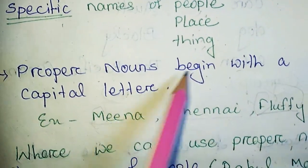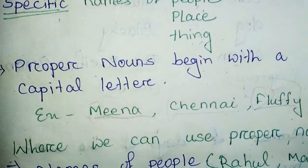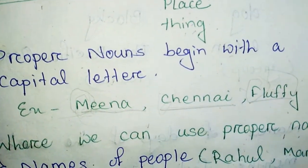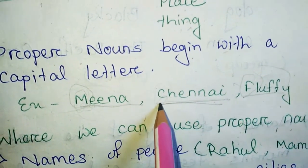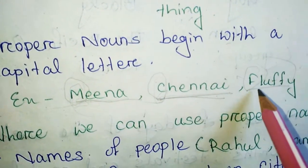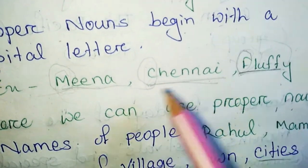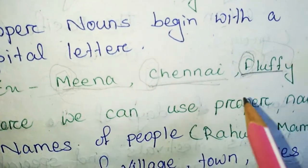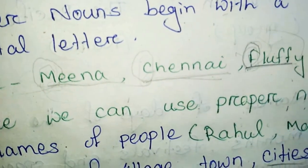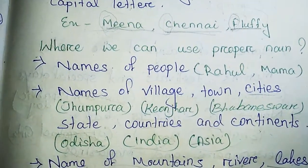And proper nouns begin with a capital letter. Here, Mina is an example of proper noun, and it begins with the capital letter M. Here, Chennai is a name and it's a proper noun — the first letter C begins with a capital letter. Here, Fluffy is a pet name, and that name begins with F, which is a capital letter. So all the proper nouns begin with a capital letter.